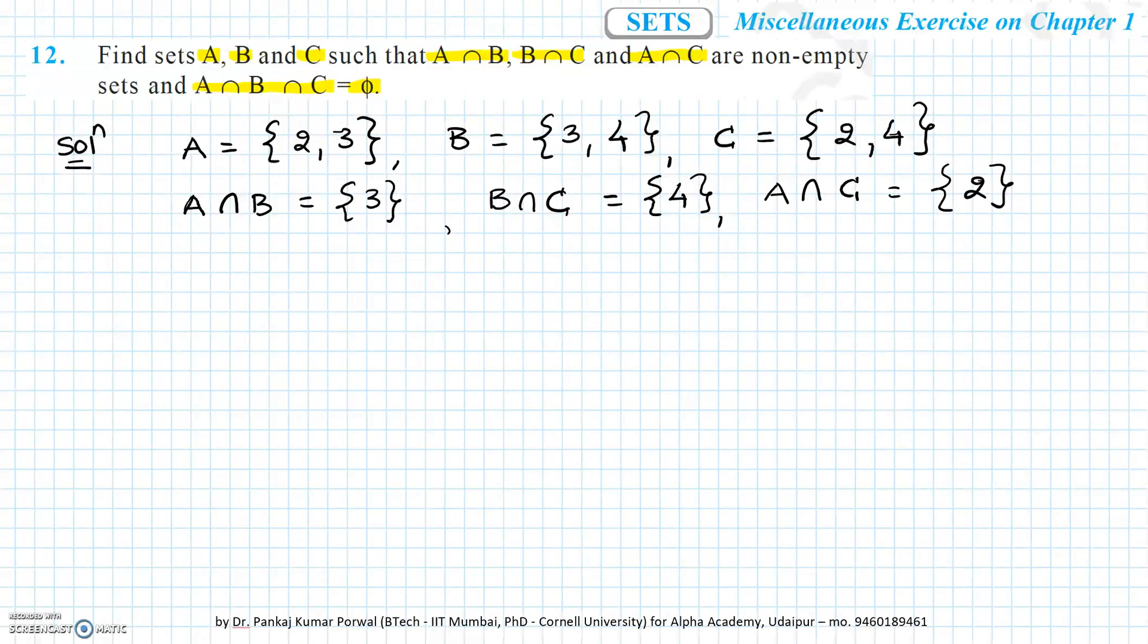And if you find A intersection B intersection C, we can do this by taking the intersection of A intersection B with C. And A intersection B intersection C is an empty set. So these are the A, B, and C that will satisfy the given properties.